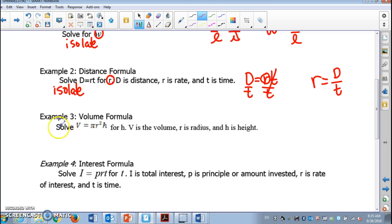Now it's volume formula. Solve V equals pi R square H for H. This time we're gonna solve for H. What does solve for H mean? That means we are going to isolate H.